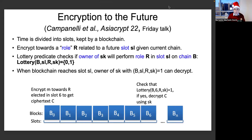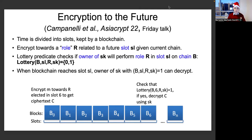The approach we take builds on the work also presented at Asiacrypt this year called "Encryption to the Future," which defines a primitive that allows you to encrypt data towards a role rather than a party. A role is assigned to a party according to a lottery predicate that tells you whether a given party has been assigned a given role at some point in time. Time is divided into slots according to a blockchain protocol, and when a certain block is produced in a given slot, that block allows you to determine which party will perform a given role at that slot. Encryption to the Future ciphertexts generated towards that role can then be decrypted by the party selected according to the lottery predicate.